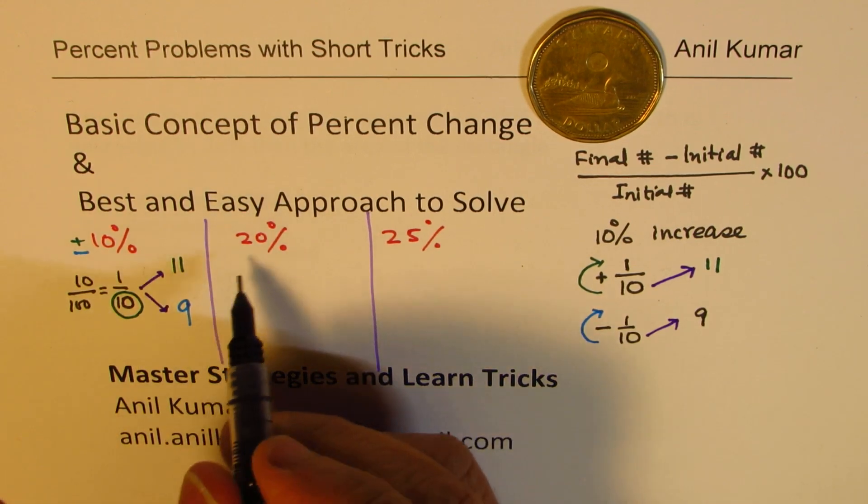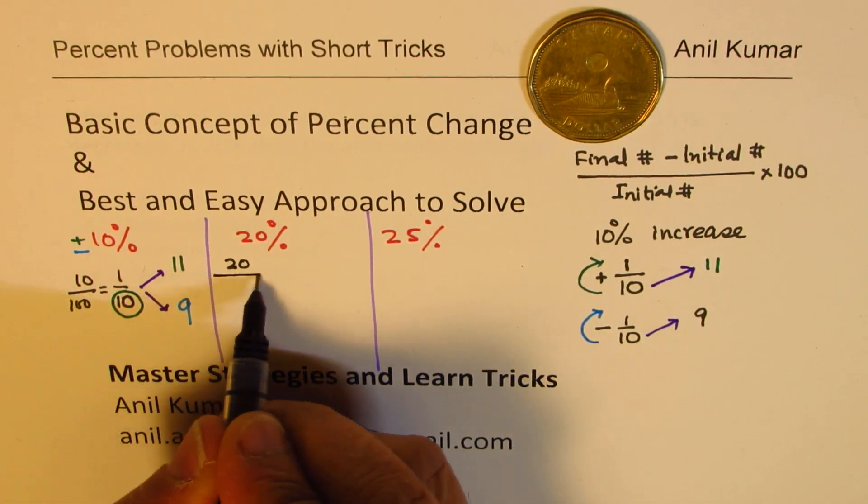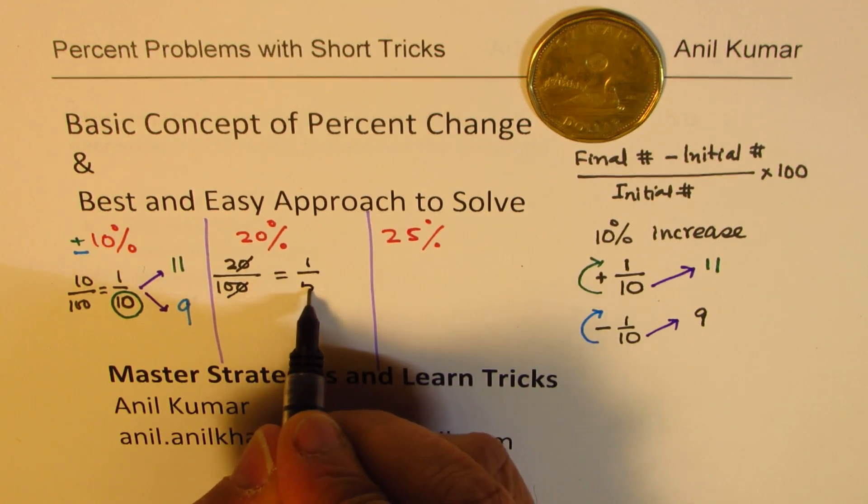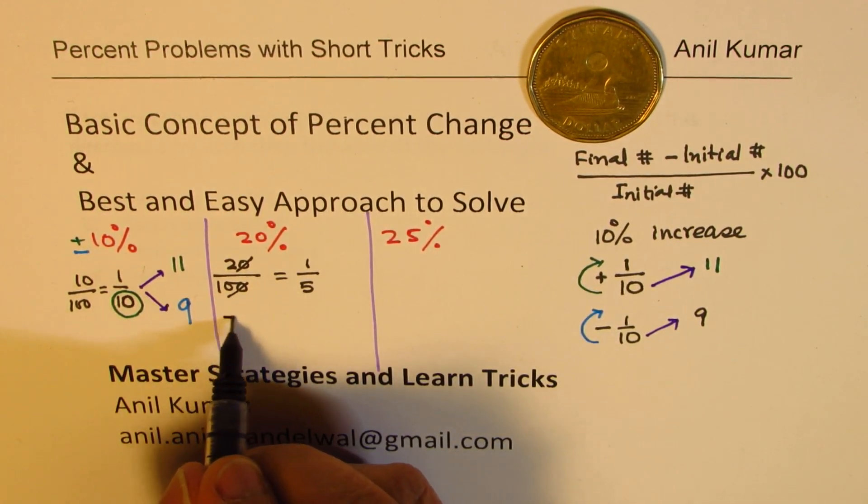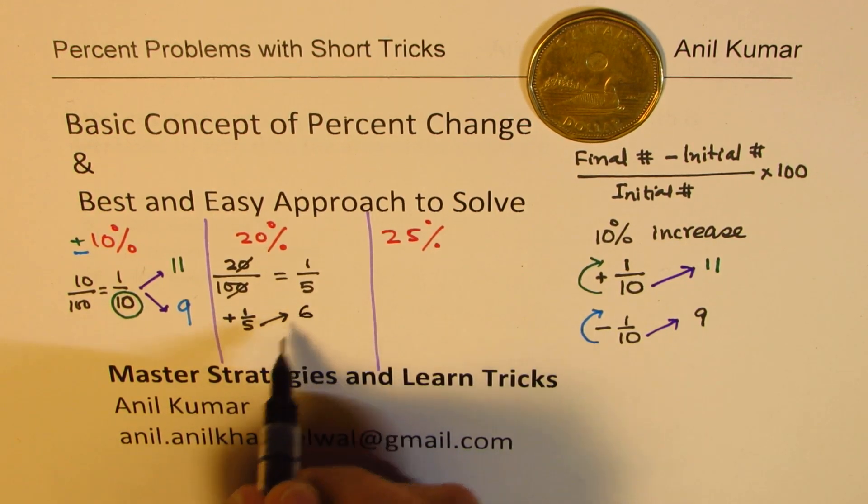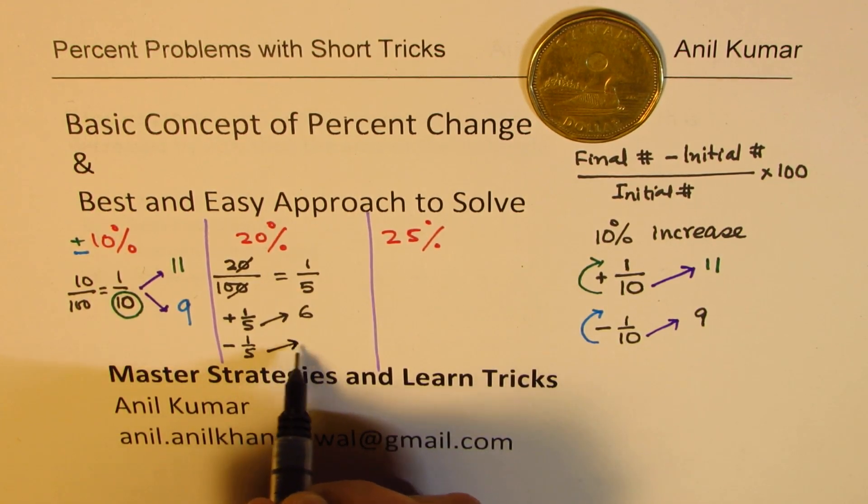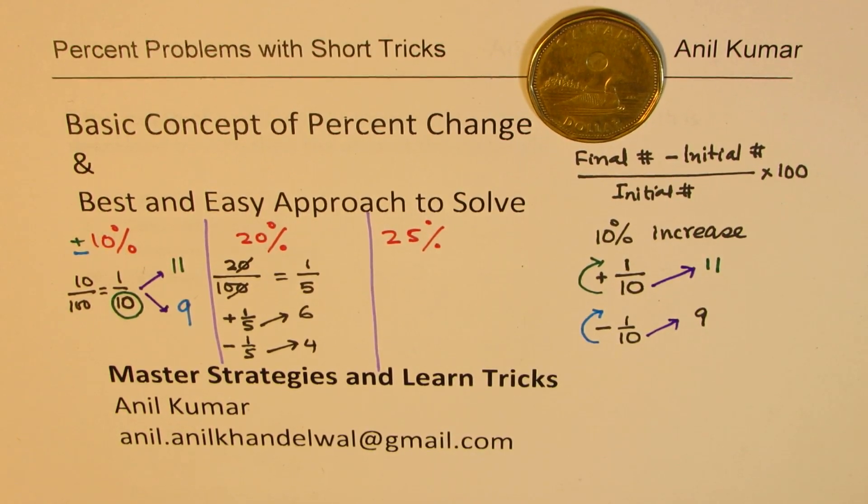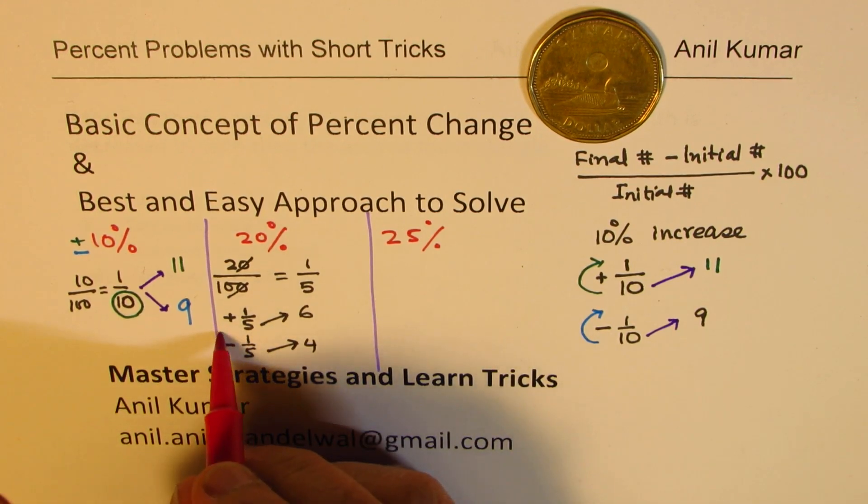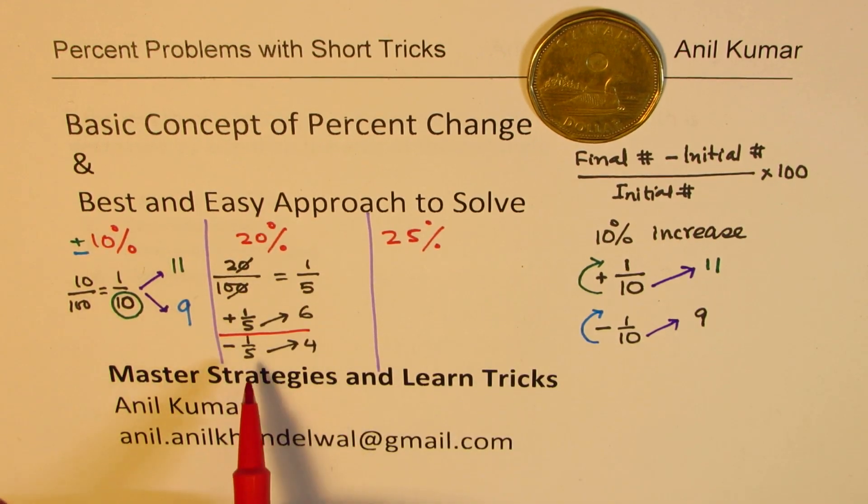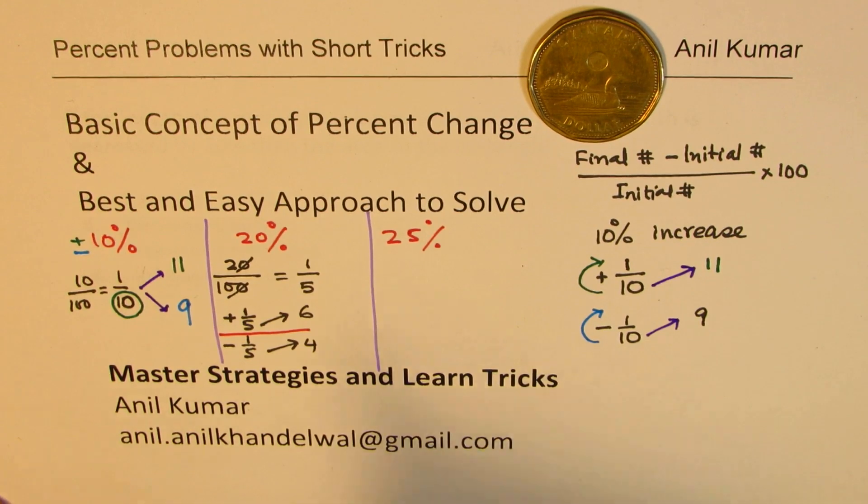If I say 10% increase, initially if I have a unit length of 10 centimeters, 10% increase means we're adding. So after 10% increase, the number 10 becomes 11. But if I say there's a decrease by 10%, the number 10 becomes 9.